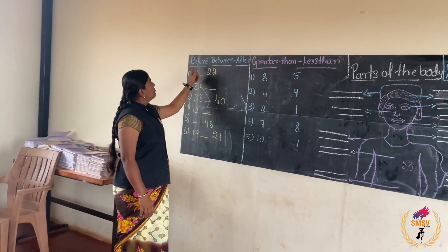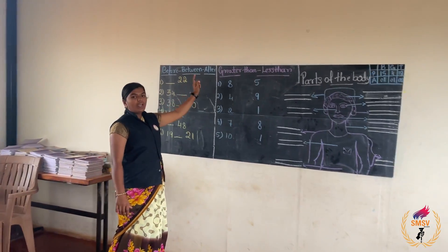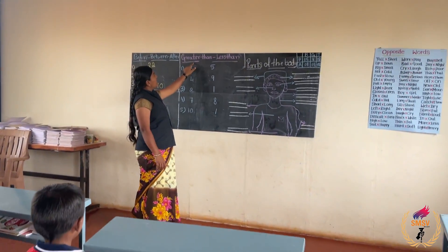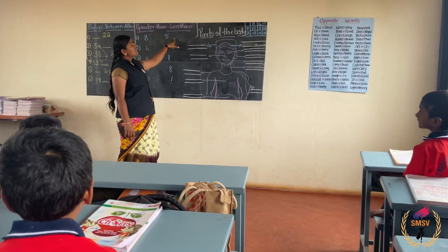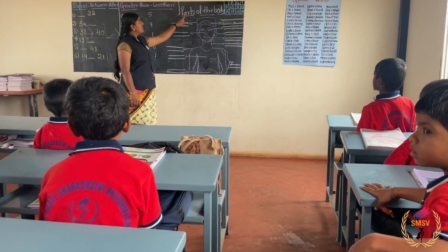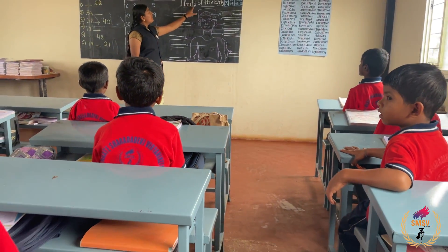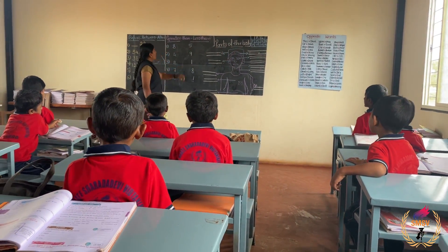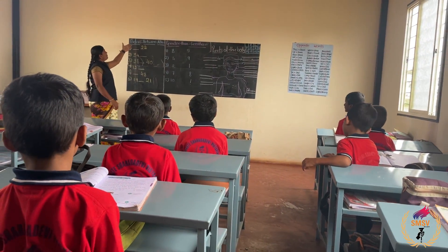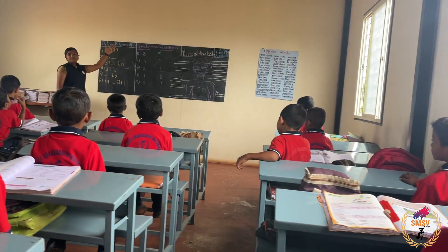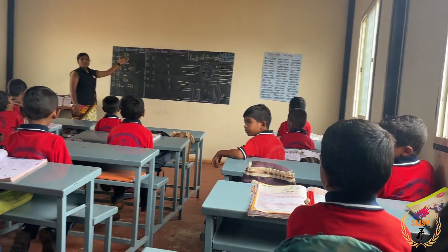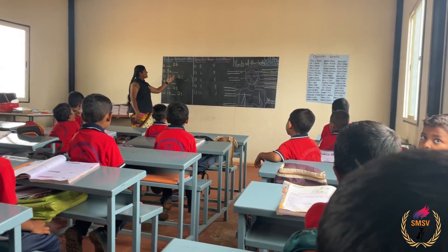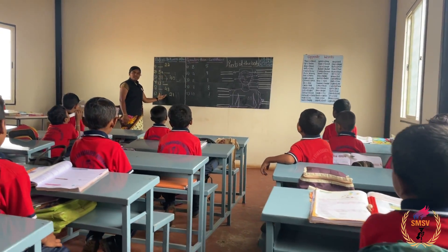First one: before, between, after. Second one: greater than, less than. Third one is parts of the body. First one is before, after and between numbers. Here some dashes are there.